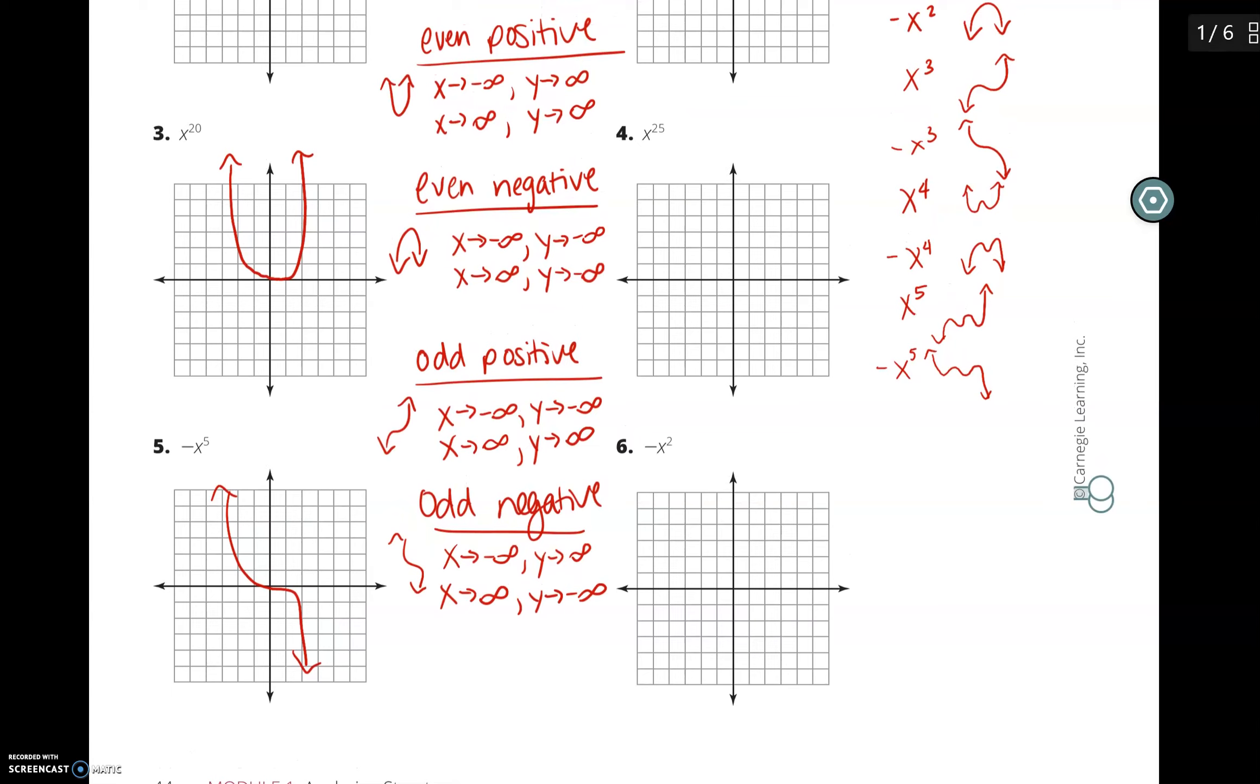So I would pause this real quick and write down this kind of a guide. So number three, my end behavior answer would be as x approaches negative infinity, y would approach positive infinity, and as x approaches positive infinity, y would approach positive infinity. So as our x gets smaller, y gets bigger. As x gets bigger, y gets bigger.